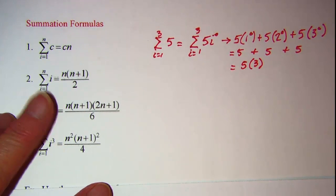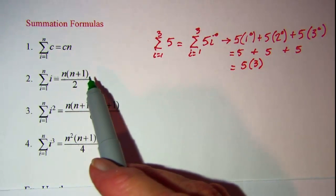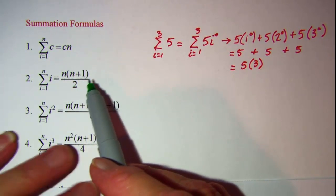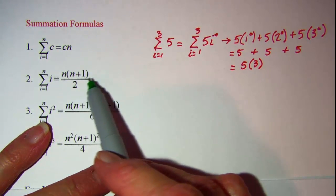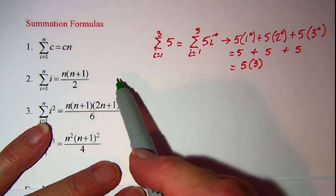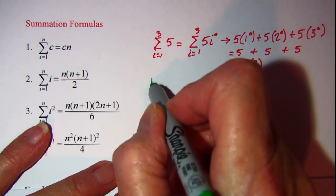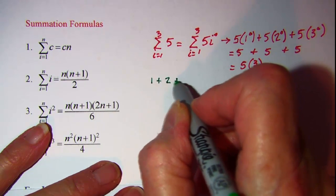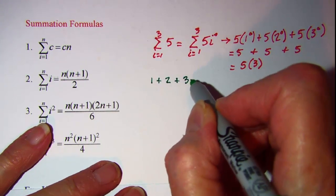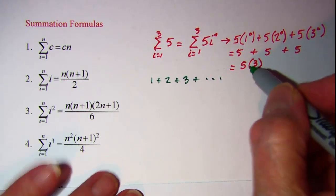Now to give an intuitive proof of the second formula I'd like to show you the method that Gauss used when he was in elementary school. The teacher asked the class to add up the numbers from 1 to 100. So he wrote the numbers down and then